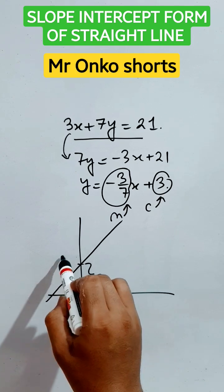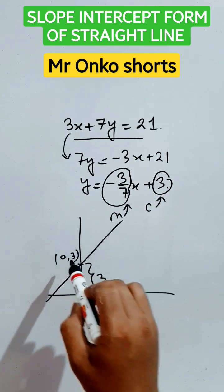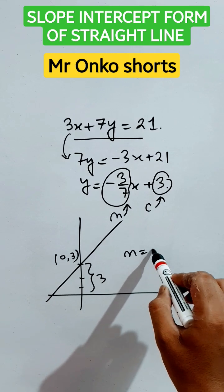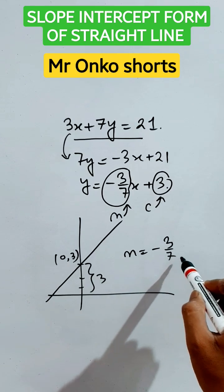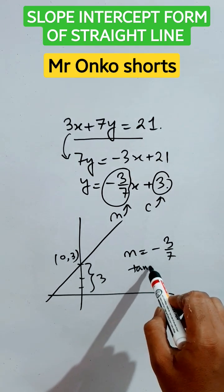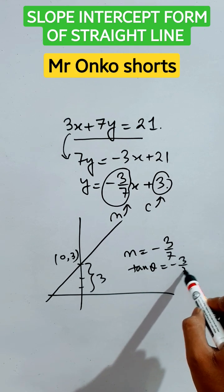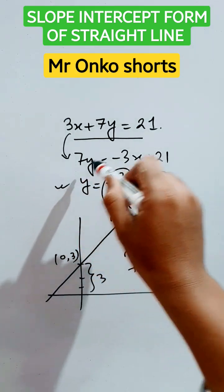The slope m = -3/7, which is nothing but tan θ = -3/7. Thus you can plot it using graph theory in the Cartesian coordinate system.